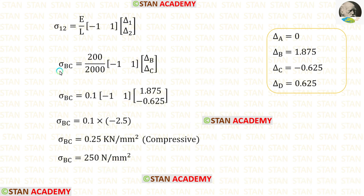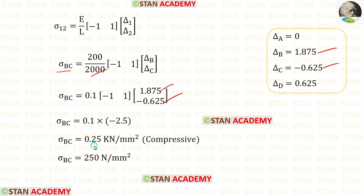Now let us find the stress in BC. The length of BC is 2000 — let us apply that, along with delta B and delta C. We will get a negative value, which means the stress is compressive. Finally for sigma BC we are getting 250 Newton per millimeter square.